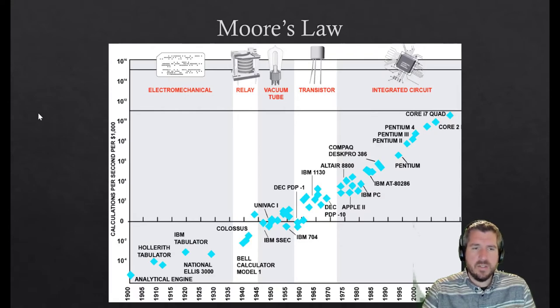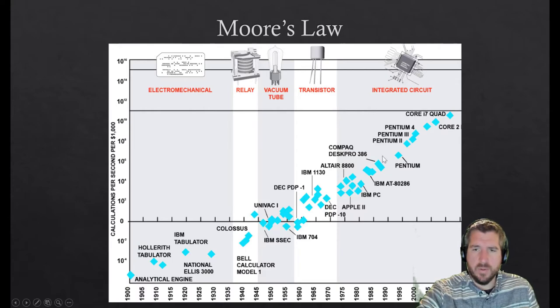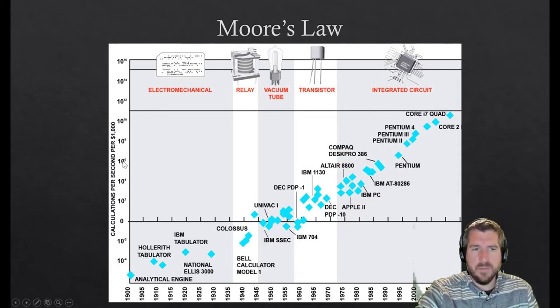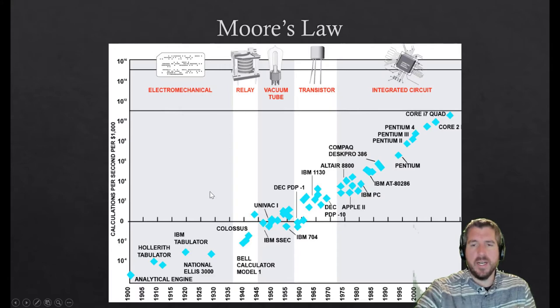What this is doing is this is actually something called a log scale. We've seen this before, right? So it looks like a straight line progression. But let's look at what the scale is. This is 100, so 10 to the 2 calculations. This is 10 to the 4 calculations, which is 10,000. Then we just keep adding 100 times that. So each one of these steps is 100 times the one before it.